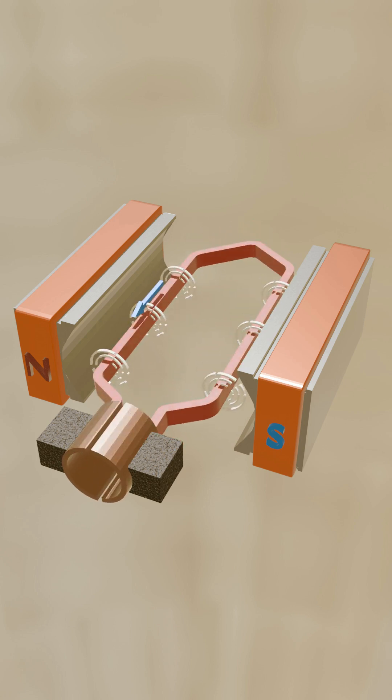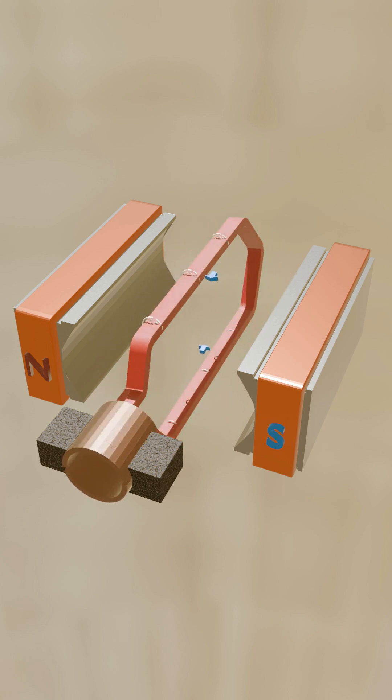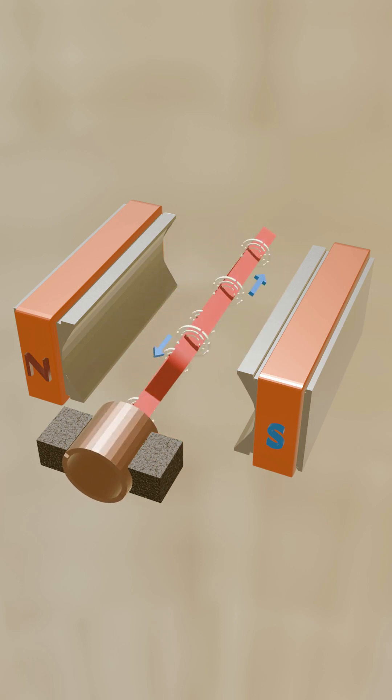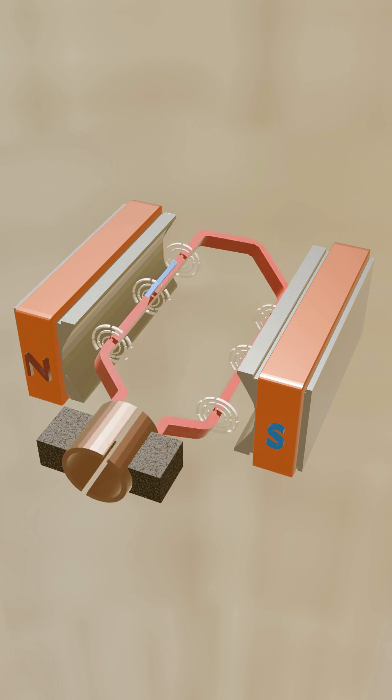As the rotor rotates, so does the commutator, switching the coil side connection from one polarity brush to the other polarity brush. This reverses the current flow in the armature coil.